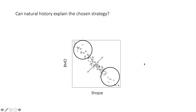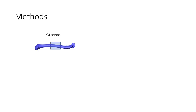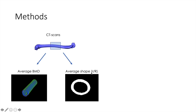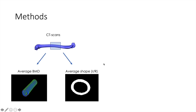To try to answer these questions, here is a summarized version of the methods. I analyzed micro CT scans from about 550 specimens of Anolis, focusing on the middle part of the shaft of the femur. I extracted a volume, analyzed it, and after extensive processing I obtained an average bone mineral density for that region and an average shape index represented by the ratio of the inner radius to the outer radius. This yielded a dataset of 90 species considering only males, or 71 species considering only females.